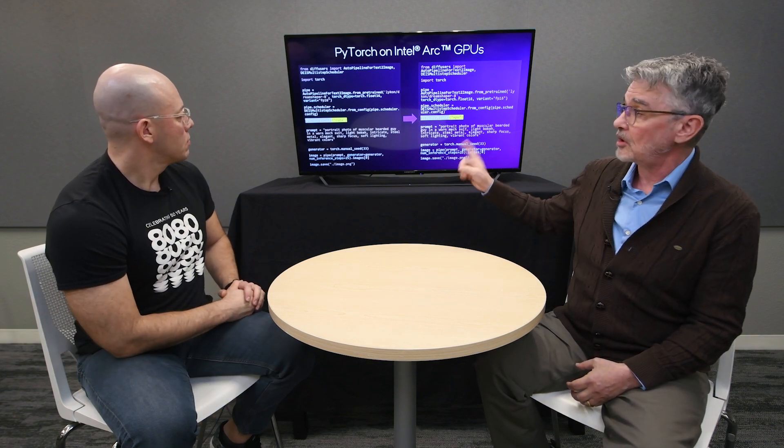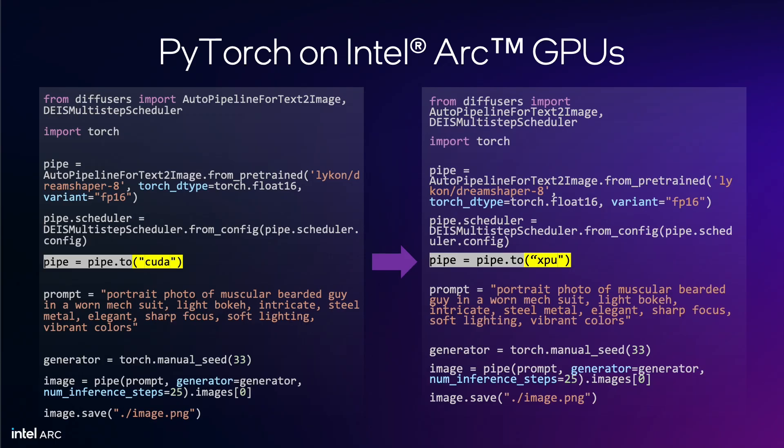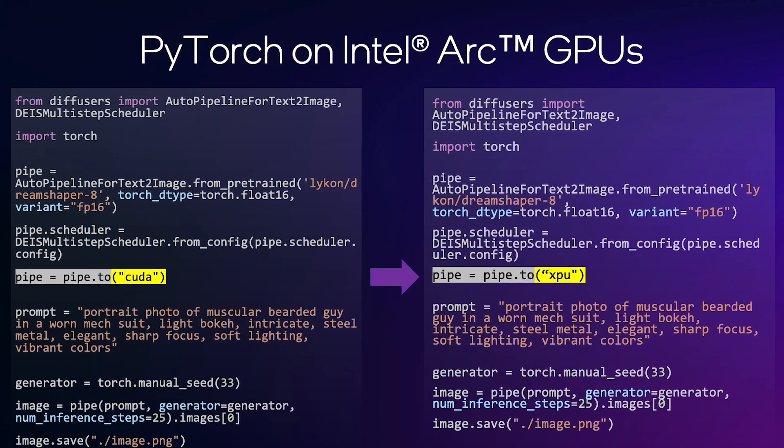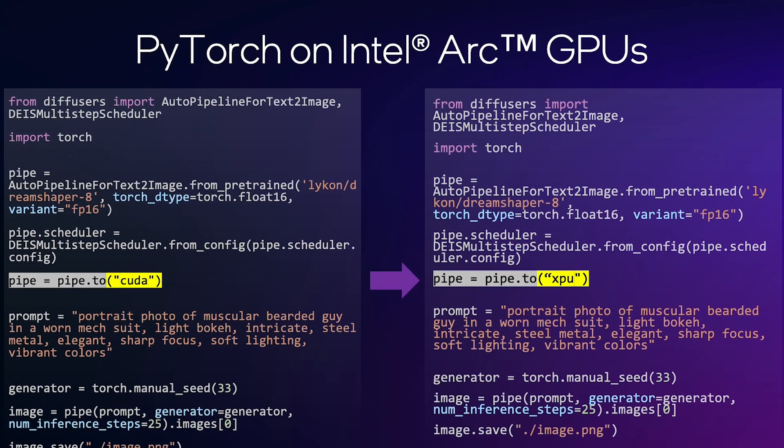Do you have to make many changes to the code in order to take advantage of that? You do have to make what I would call minimal code changes. So this is code taken directly from Hugging Face, and you can see where it says CUDA in yellow — that's where it targets a CUDA device. This is the exact same code, and the only change is right there where we changed CUDA to XPU. So as long as you're using our libraries, it's a minimal code change.